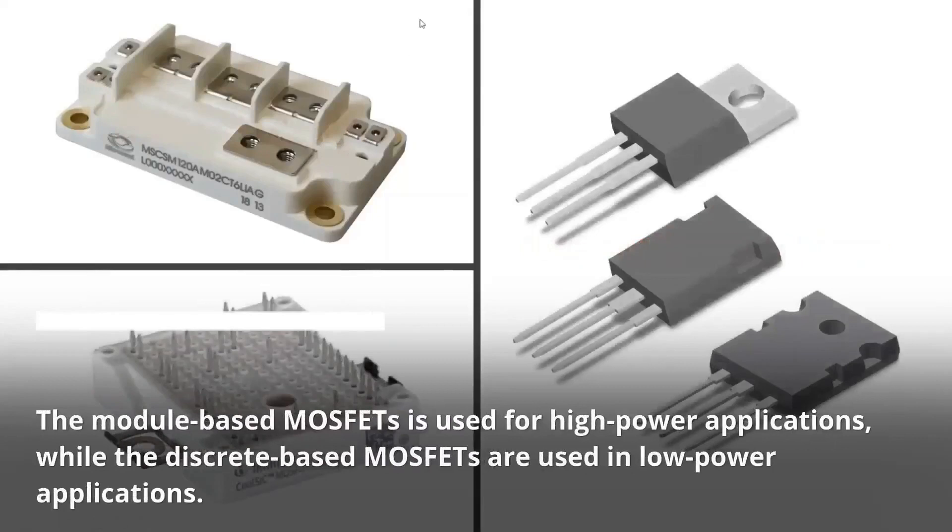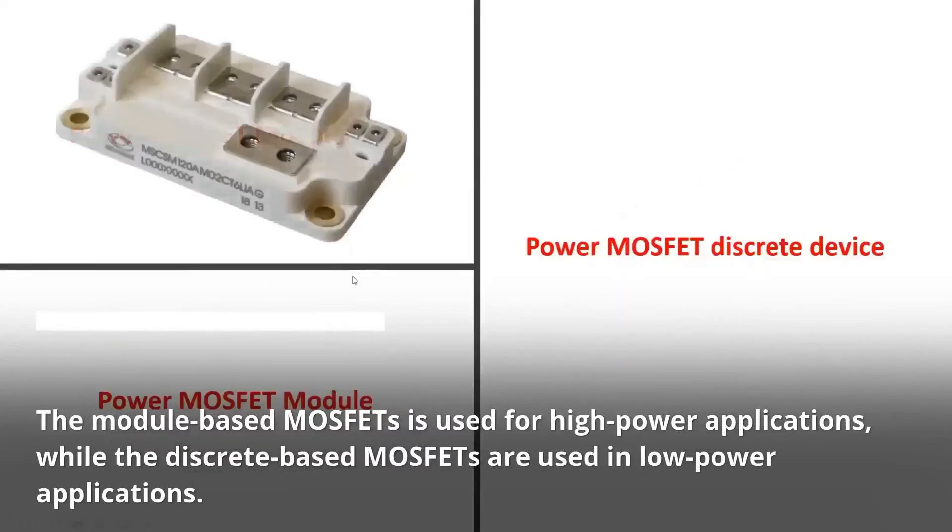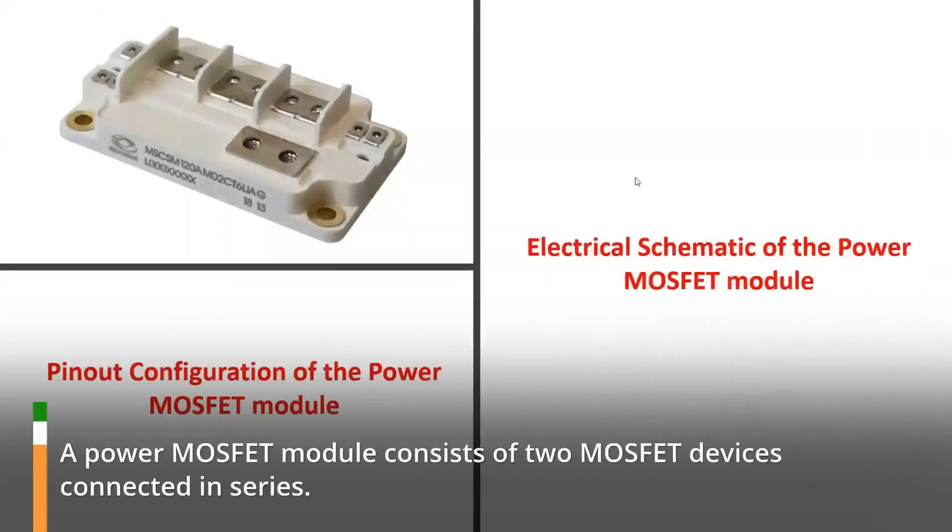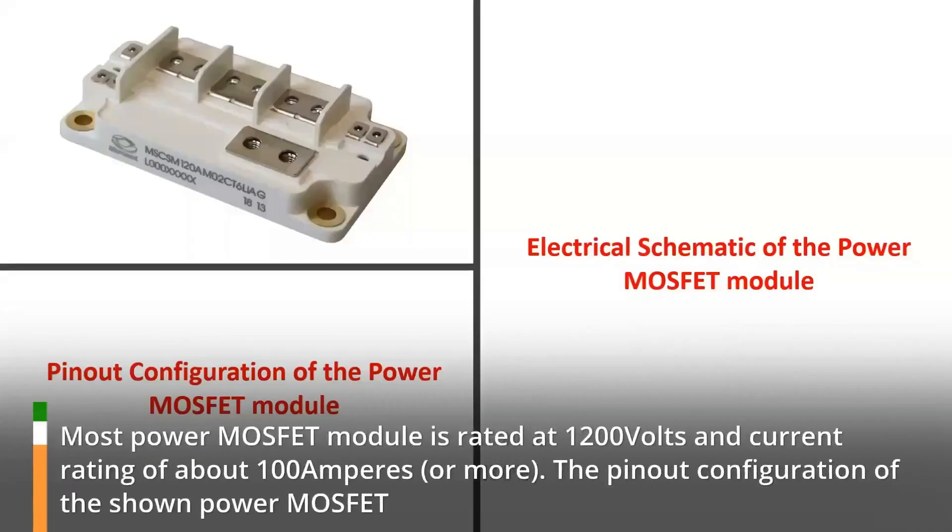The module-based MOSFETs is used for high-power applications, while the discrete-based MOSFETs are used in low-power applications. A power MOSFET module consists of two MOSFET devices connected in series. Most power MOSFET module is rated at 1200 volts and current rating of about 100 amperes, or more.